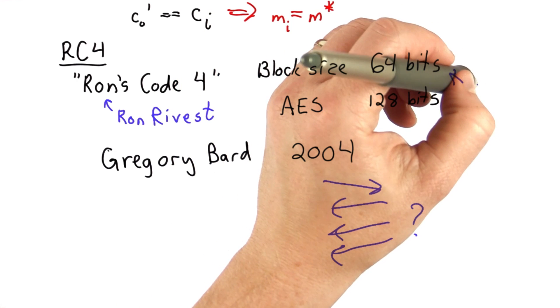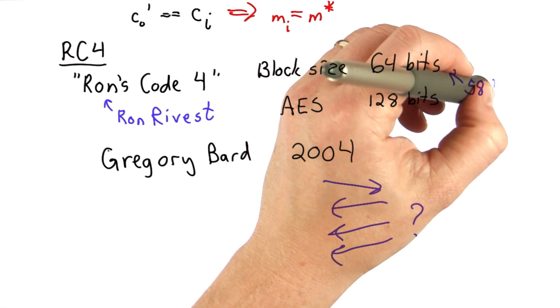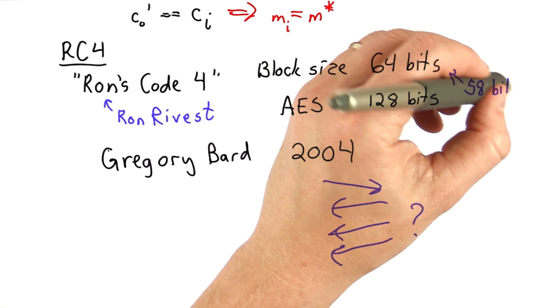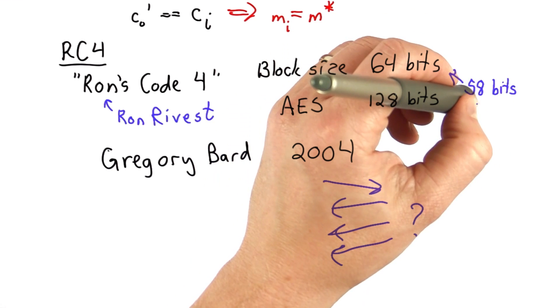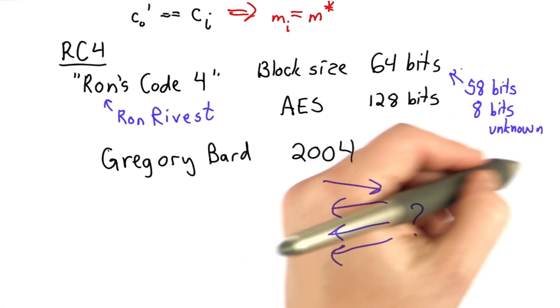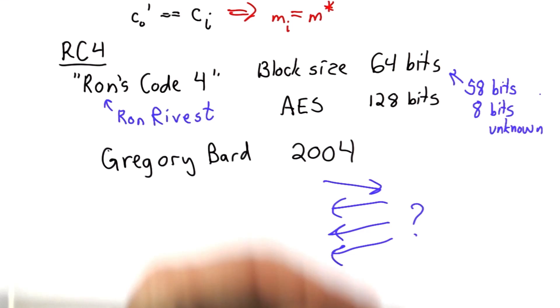The other thing the attacker could do is figure out a way to know many of the bits. So suppose the attacker knows 58 bits, and there's one byte, but that byte contains one character of an authentication token that could be part of a cookie, say.